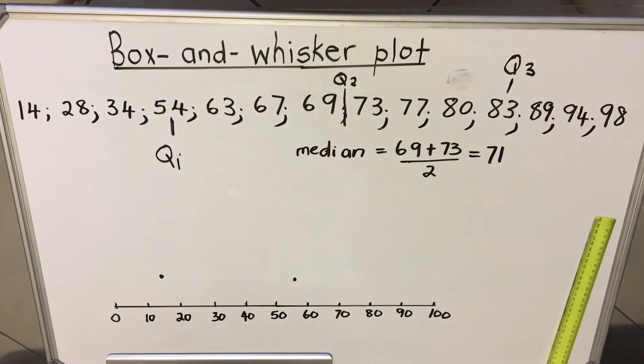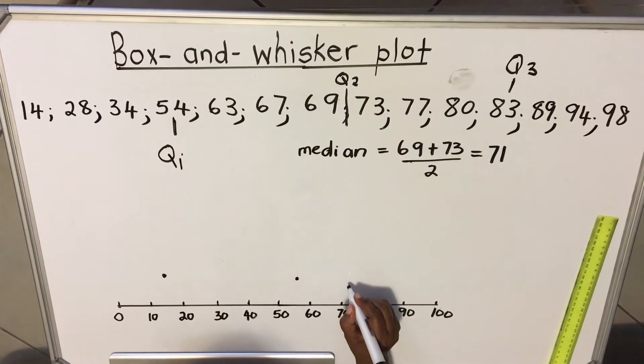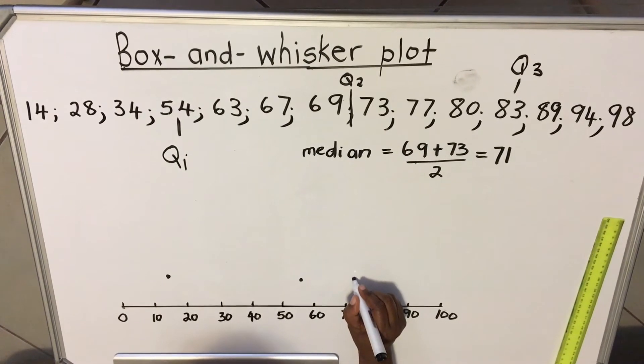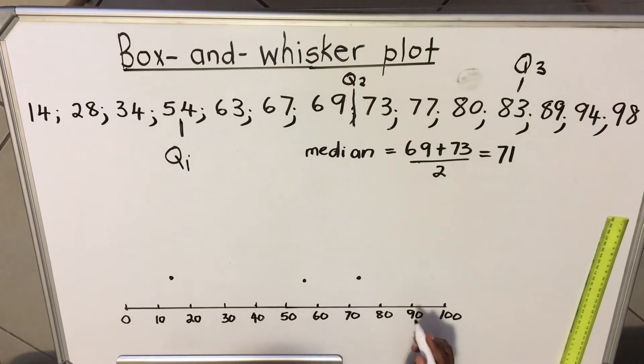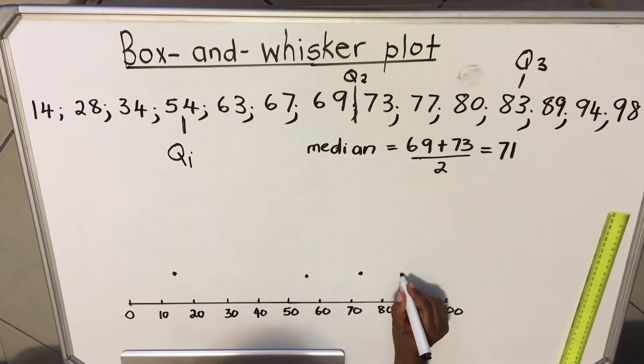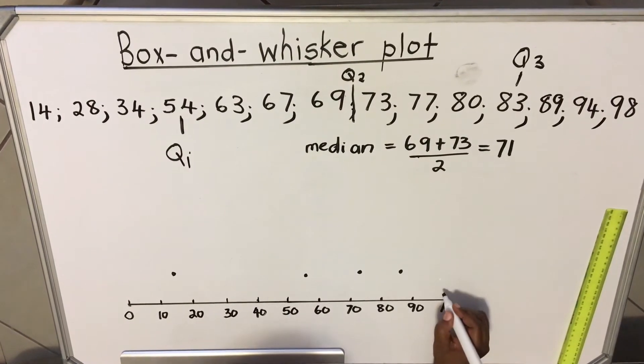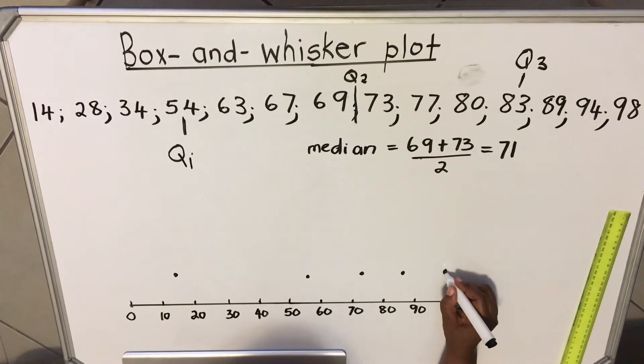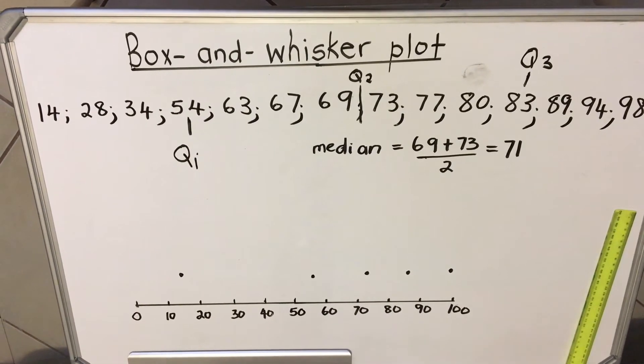And then our Q2 - you remember you calculated it - is 71, so it's closer to 70. 71. And then our Q3, 83. 83, around there. And our highest value is 98, close to 100. 98 right there.